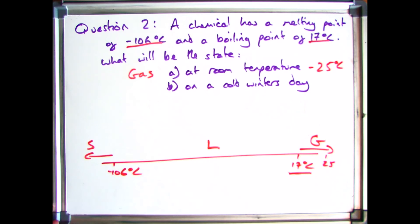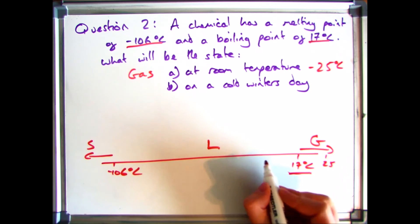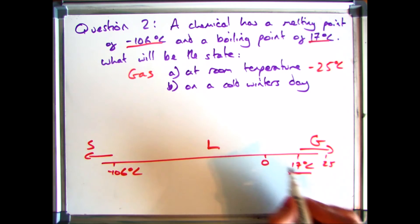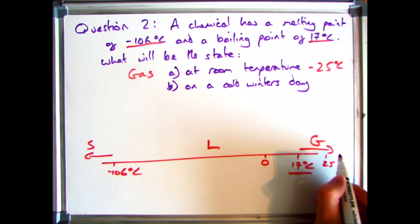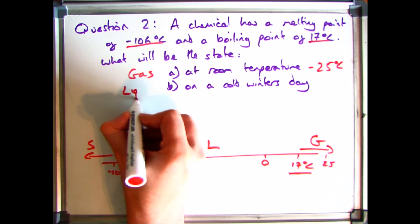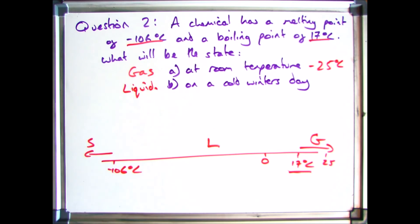B, it says a cold winter's day. You can usually presume that's going to be quite low. Usually around the zero mark. Zero to five. So straight away you can put that in and go right. Well it's between gas and a solid. So it's got to be a liquid.